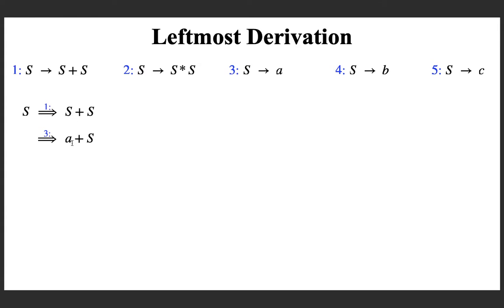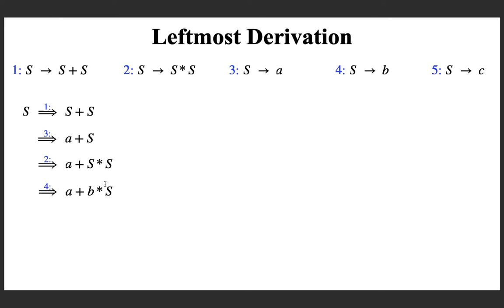Now I am going to apply a production for this capital S, which is the only one in this sentential form. I am going to apply production number 2, which means capital S is going to be replaced with S star S. Now for the leftmost non-terminal here, I apply production number 4. So this capital S will be replaced by small 'b'. And finally, to obtain a sentence or a string of terminals, we need to apply a production for capital S. Suppose you apply production number 5, so you will get this string derived.